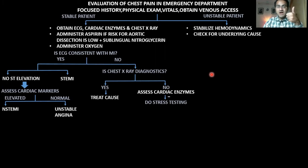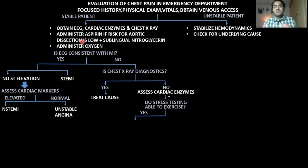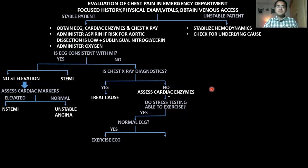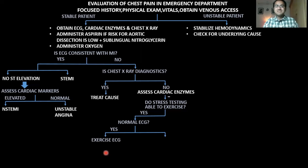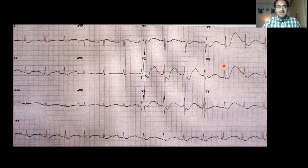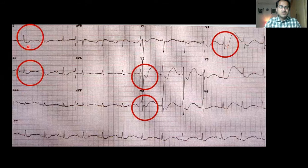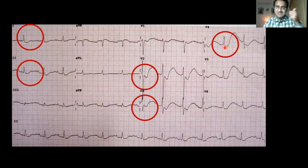For stress testing, first determine whether the patient can exercise. If the patient is able to exercise, check whether the previous ECG was normal or abnormal. If the previous ECG is normal, go for exercise ECG — repeat the ECG while the patient is exercising. If there is coronary artery stenosis, the exercise ECG will be abnormal, and you pick up that abnormality. An exercise ECG showing ST segment depression in multiple leads indicates ischemia — the heart is hypoxic.